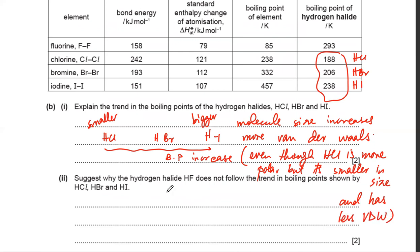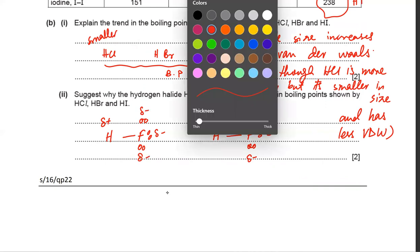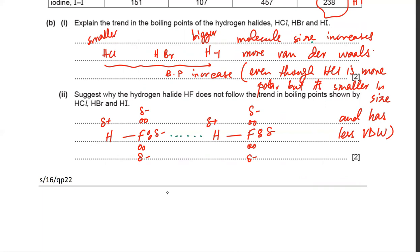HF does not follow the trend of the other hydrogen halides because it has hydrogen bonds — the strongest intermolecular force. Fluorine is one of the most electronegative elements and has plenty of lone pairs, so H–F molecules form strong hydrogen bonds with each other.